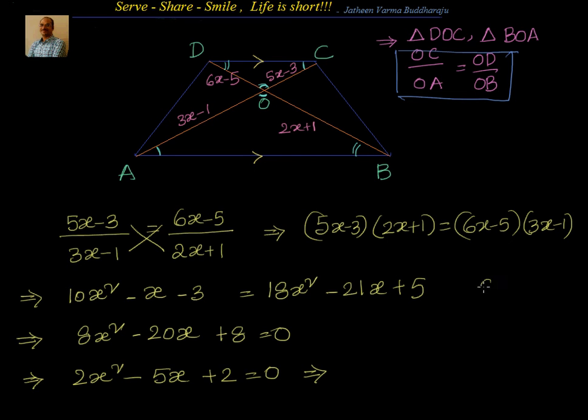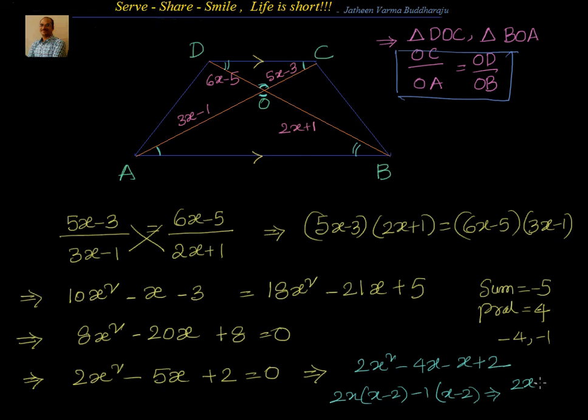Now, I have sum equal to minus 5 here and product is equal to plus 4. So, can I go for minus 4 comma minus 1? So, I will write it as 2X square minus 4X minus X plus 2 or can I say 2X into X minus 2 minus 1 into X minus 2 or 2X minus 1 into X minus 2 equal to 0.